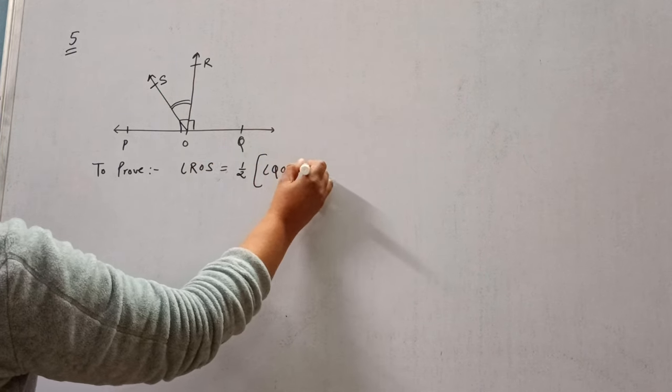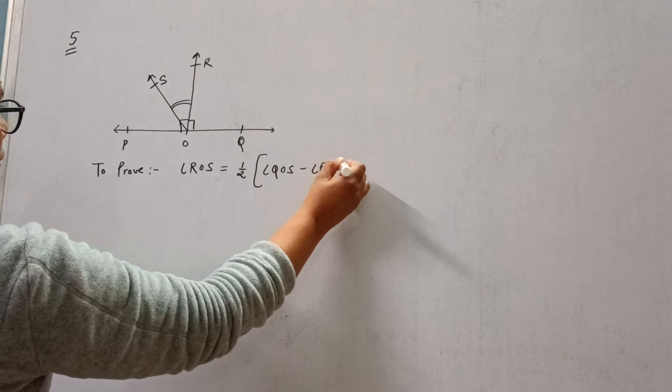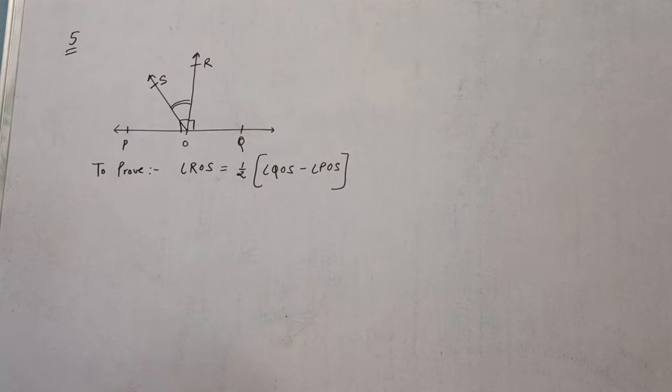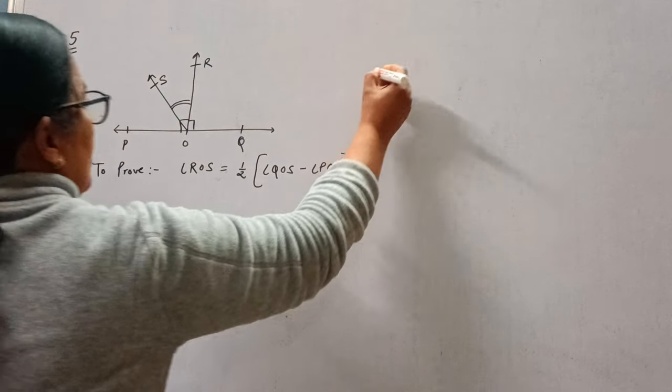Okay, so we need to prove angle ROS is half of angle QOS minus POS. So let's start. Prove: